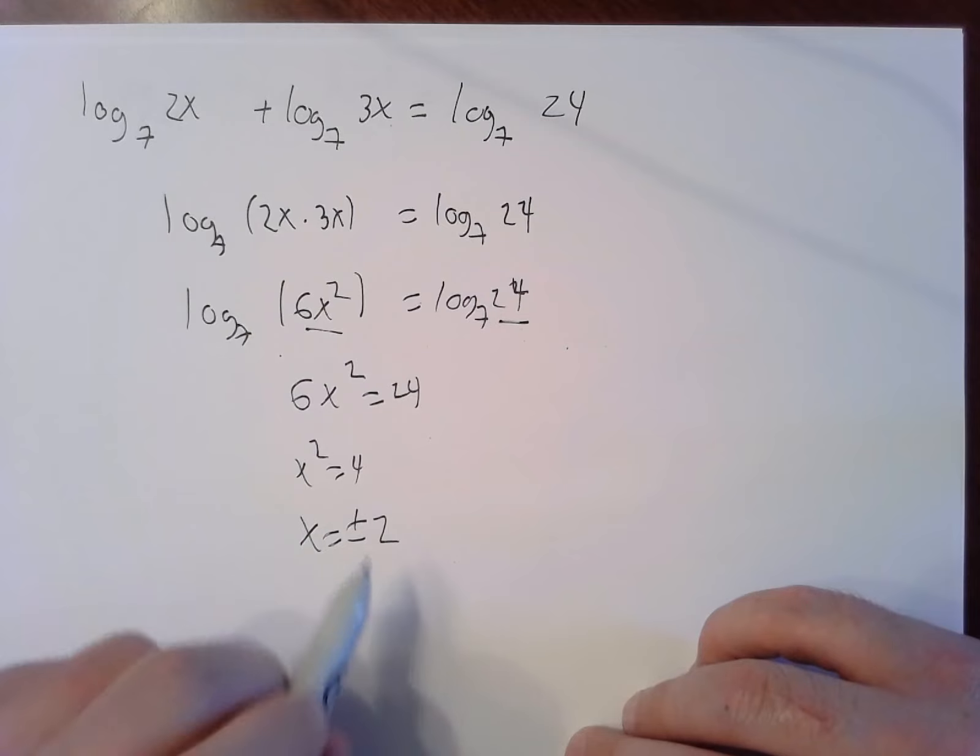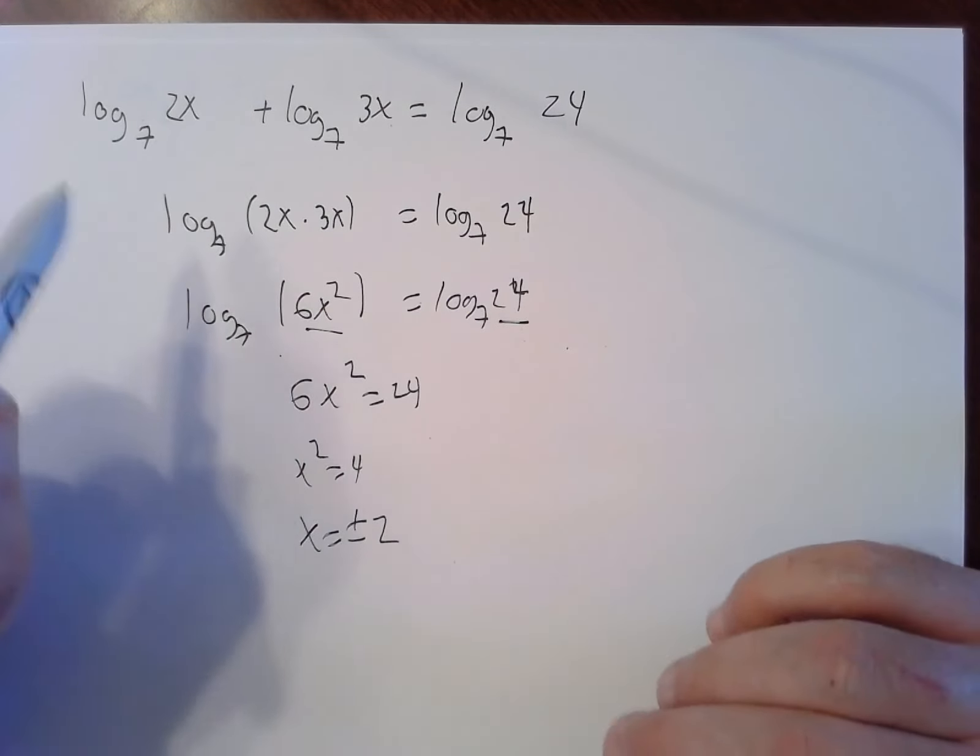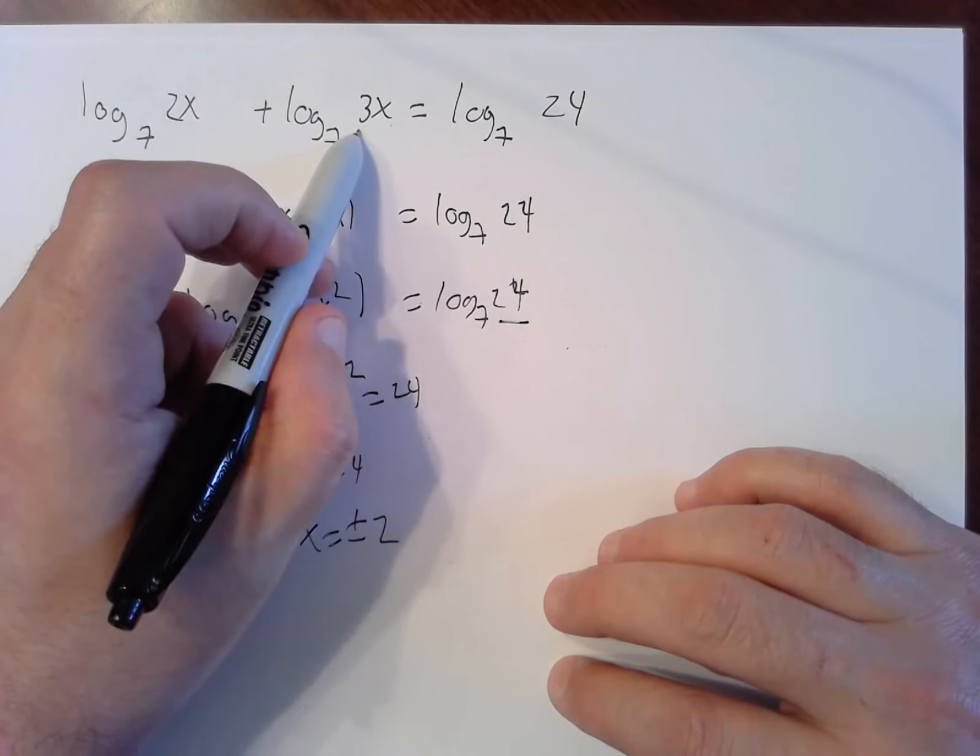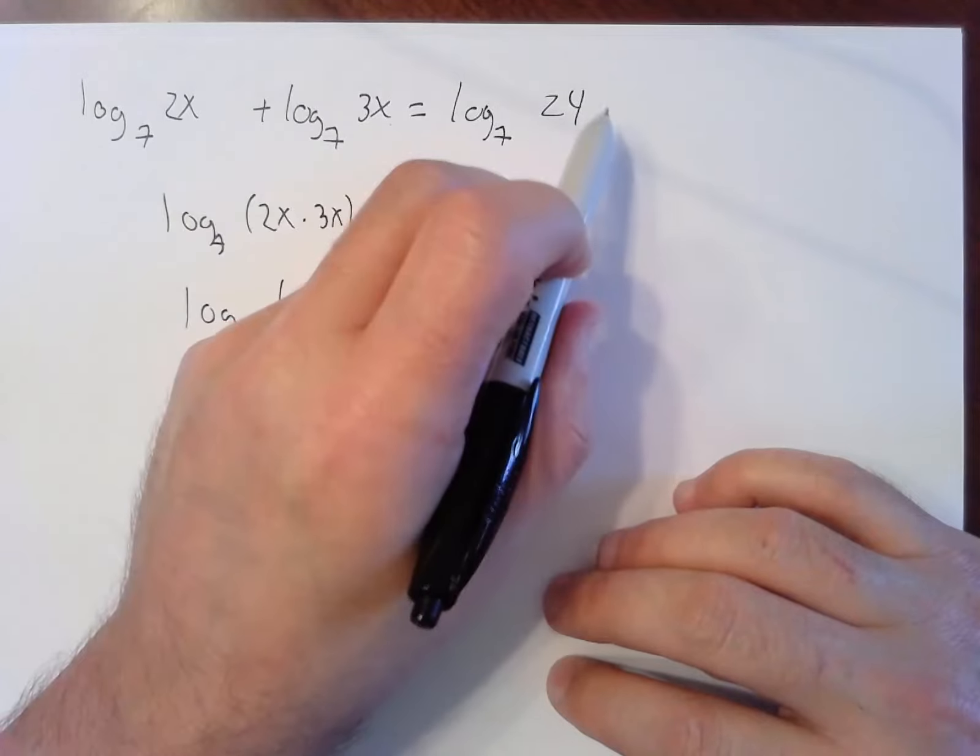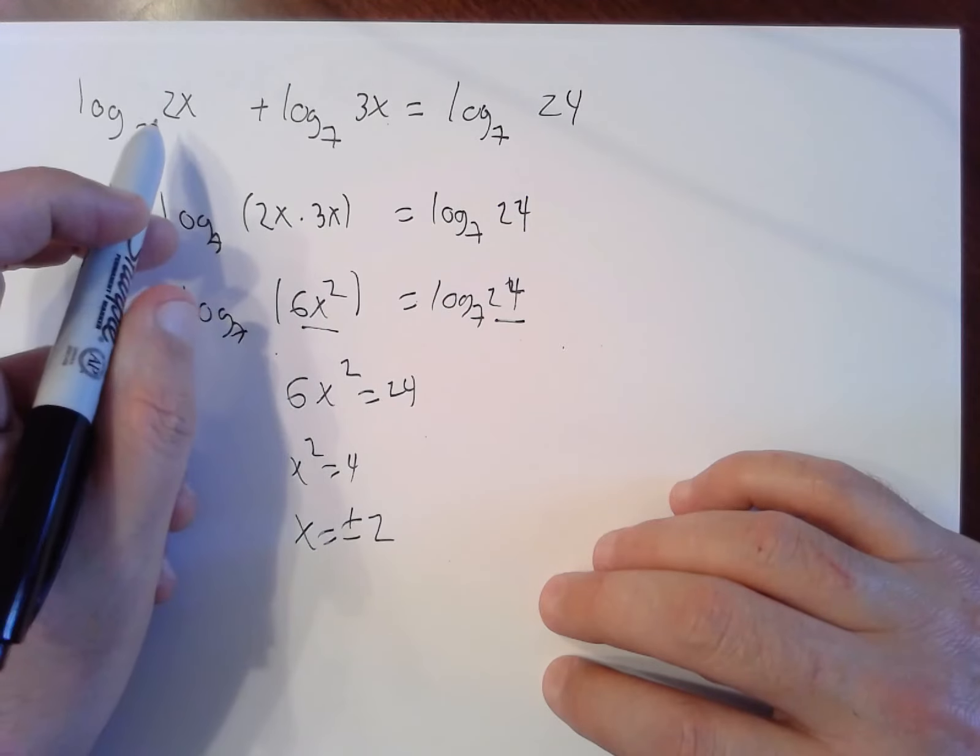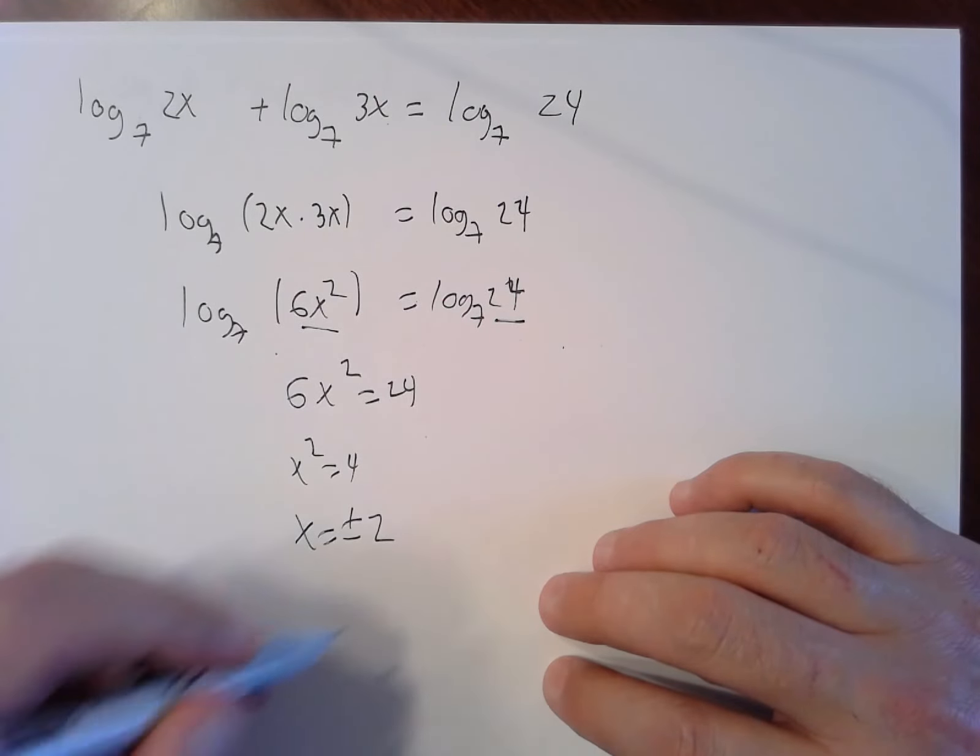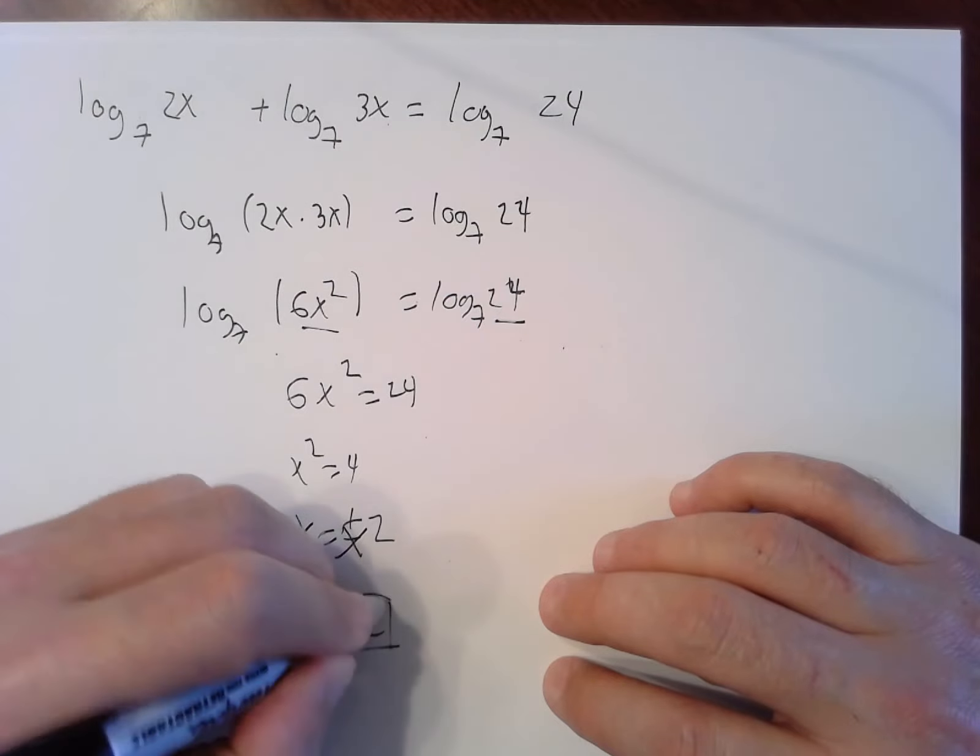6x squared equals 24. Divide by 6, x squared equals 4, x is plus or minus 2. Again I have to check and see if I'm allowed to use these numbers. If I plug in positive 2, I get log of 4, log of 6. Those are both okay. Notice by the way 4 times 6 does equal 24. Positive 2 is good. Negative, right here, 2 times negative 2 would be negative 4. I cannot take log of negative 4. Negative 2 is no good. I just get x equals 2.